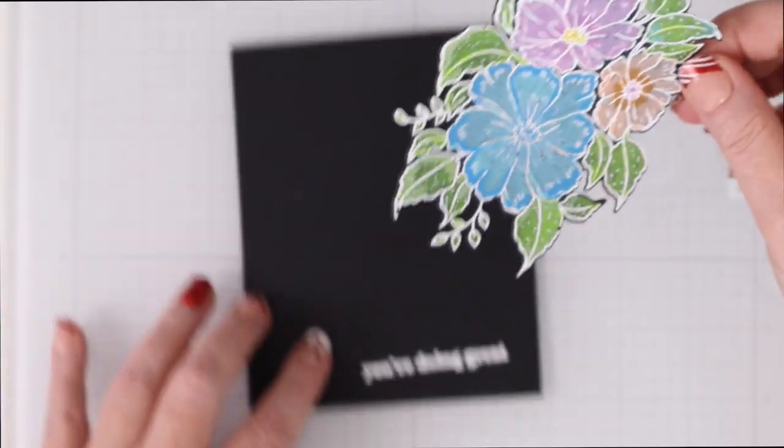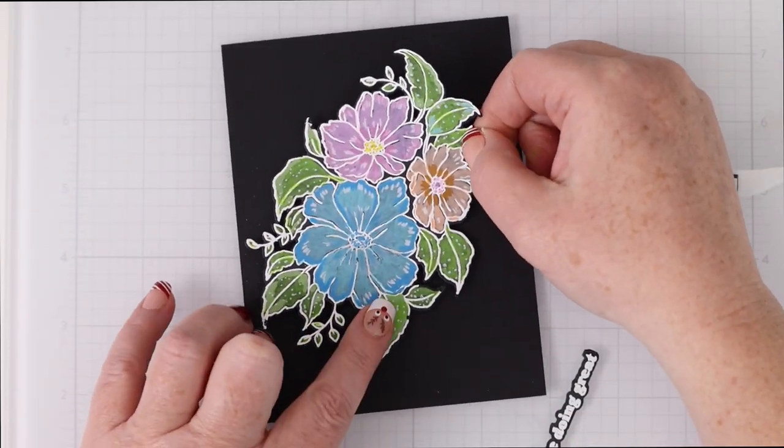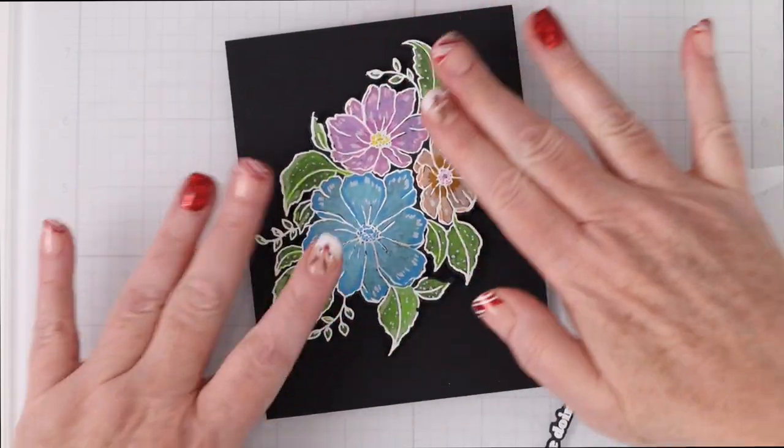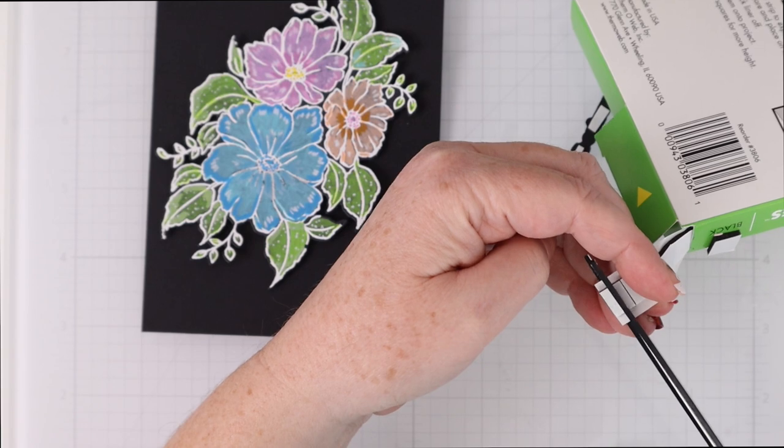So peeling off all those protective layers and then I'm going to just brush away any excess powder that I had on there and lay this down and I just it's amazing to me how bright and vibrant the colors are on that black cardstock.